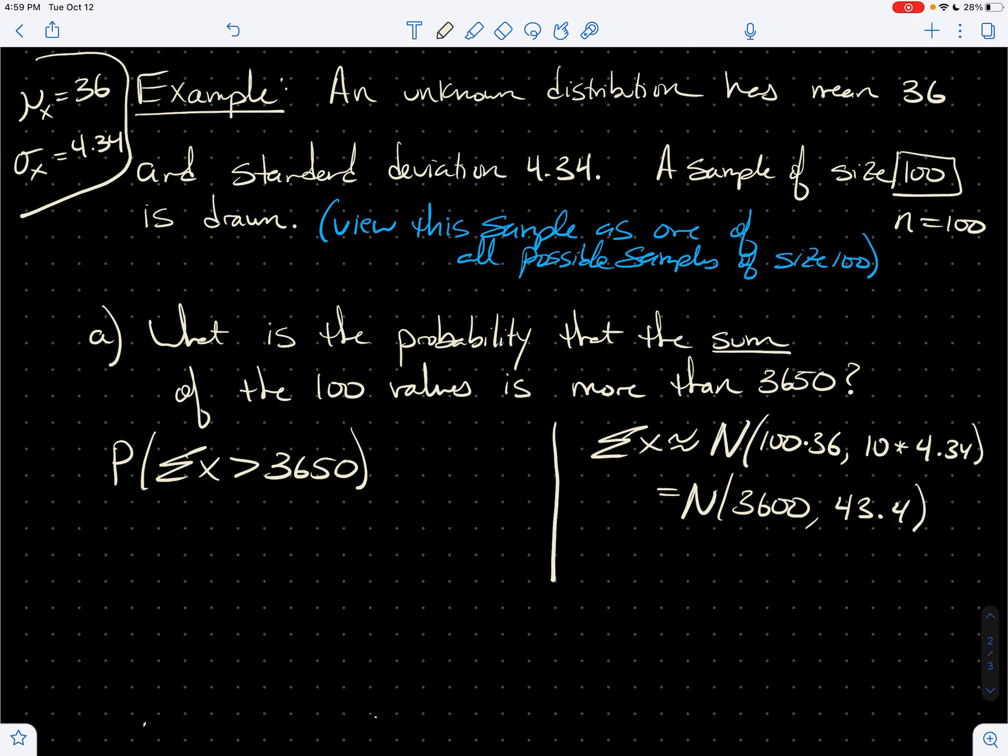So once we realize that, as my samples vary, I'm looking at all possible samples of size 100, as my samples vary, the sum of those samples vary. And they don't just vary, they vary in a very predictable way. They follow the normal distribution with mean 3600, standard deviation 43.4.